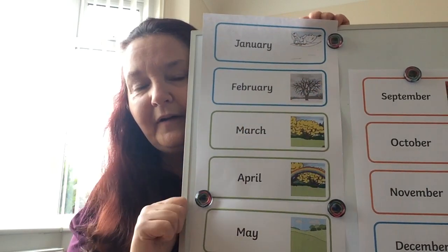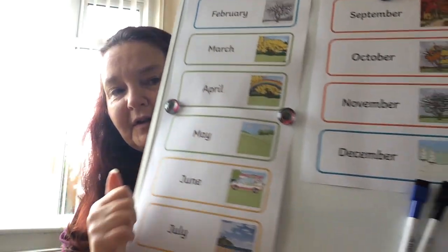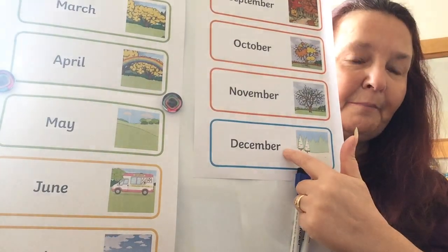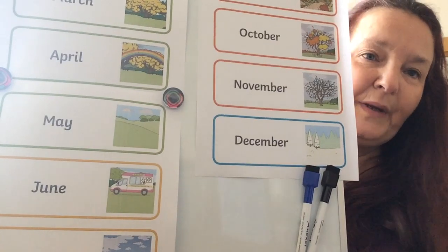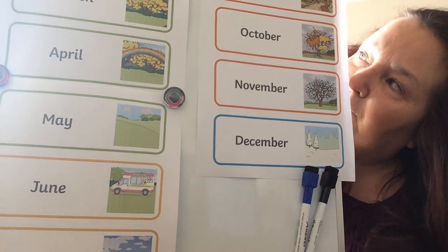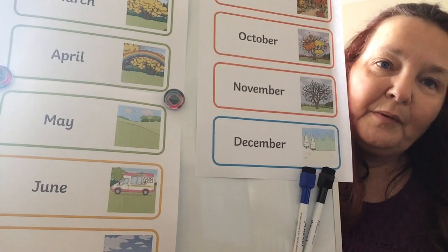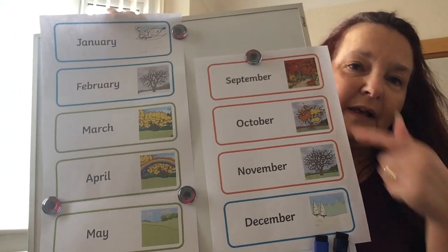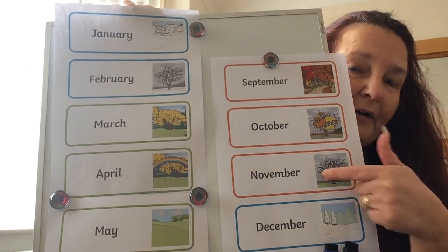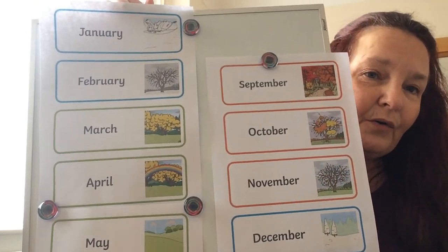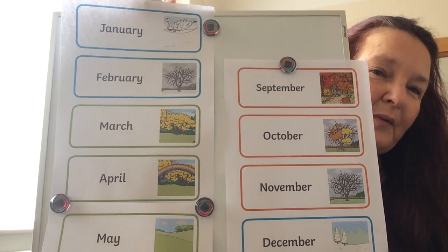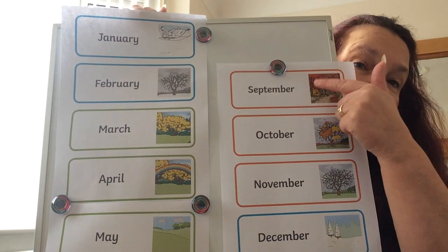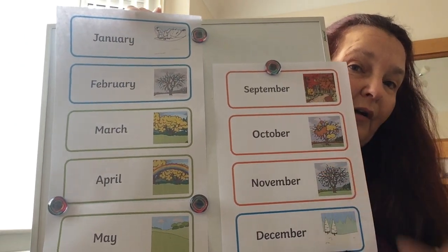January and February are winter months. If I look over to December over here, December is also a winter month. So December, January and February are our winter months. September, October and November are our autumn months. Sometimes autumn is called the fall — F-A-L-L — because that's when the leaves fall off the trees.